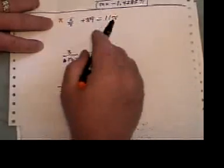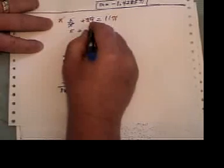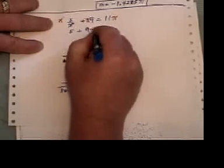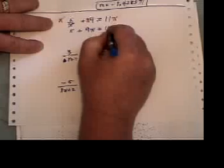So here I'm taking all three terms and multiplying them by x. This x cancels this x and I'm left with 5. I have 9 times x there and 11 times x there.